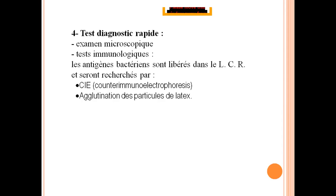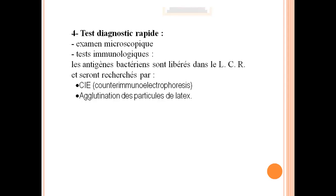Pour les tests rapides, l'examen microscopique permet d'orienter le clinicien pour le traitement probabiliste. Il y a les tests immunologiques basés sur les antigènes libérés par la bactérie dans le LCR. Ce qu'on fait généralement au laboratoire, c'est l'agglutination des particules de latex : si ça agglutine, c'est le signe de la présence d'antigènes d'une bactérie donnée. Cela permet aussi l'orientation pour le traitement probabiliste en attendant l'antibiogramme. La culture et l'antibiogramme restent obligatoires.